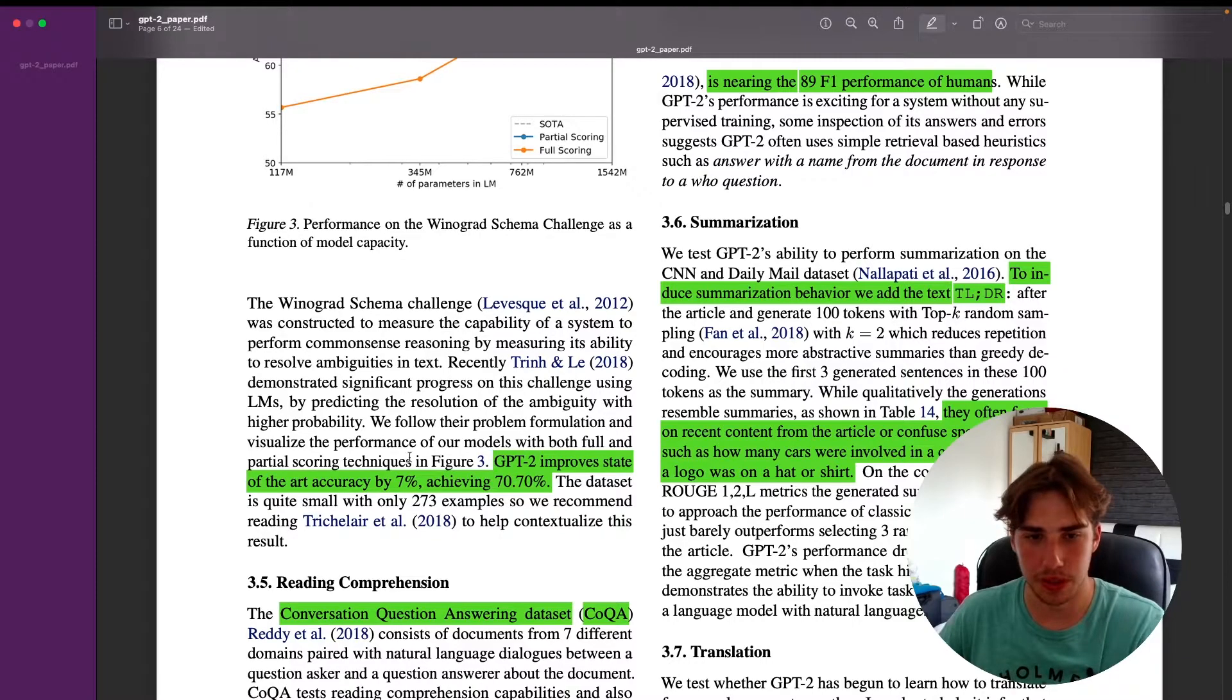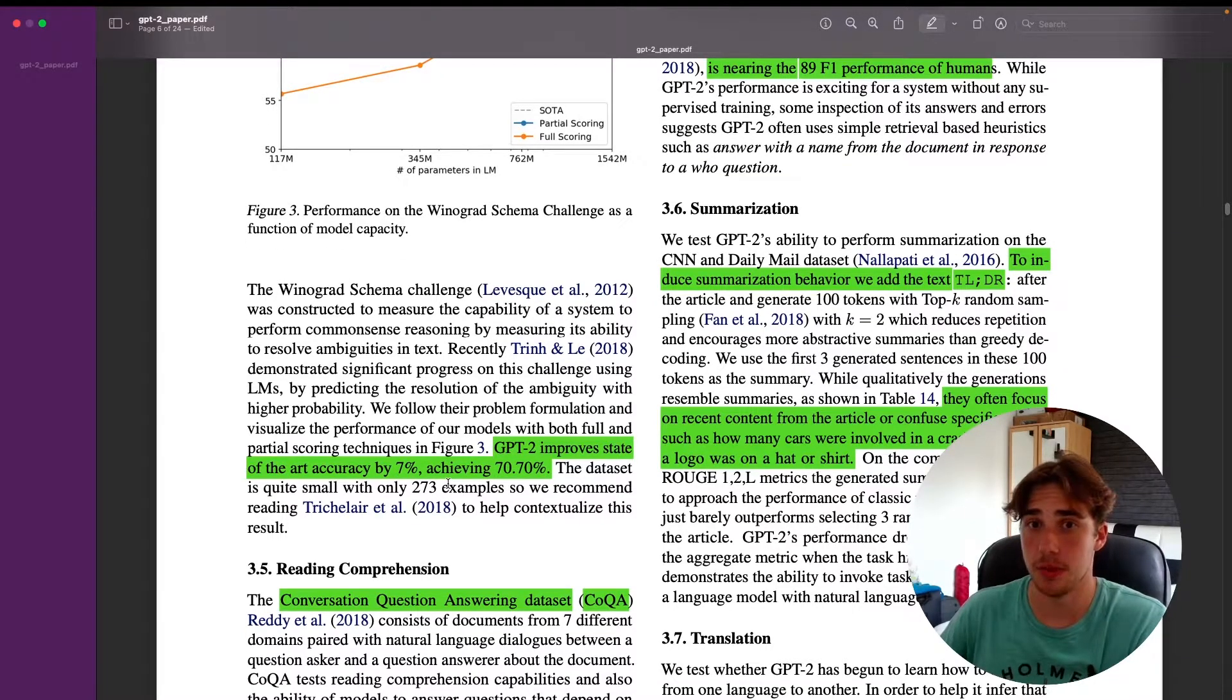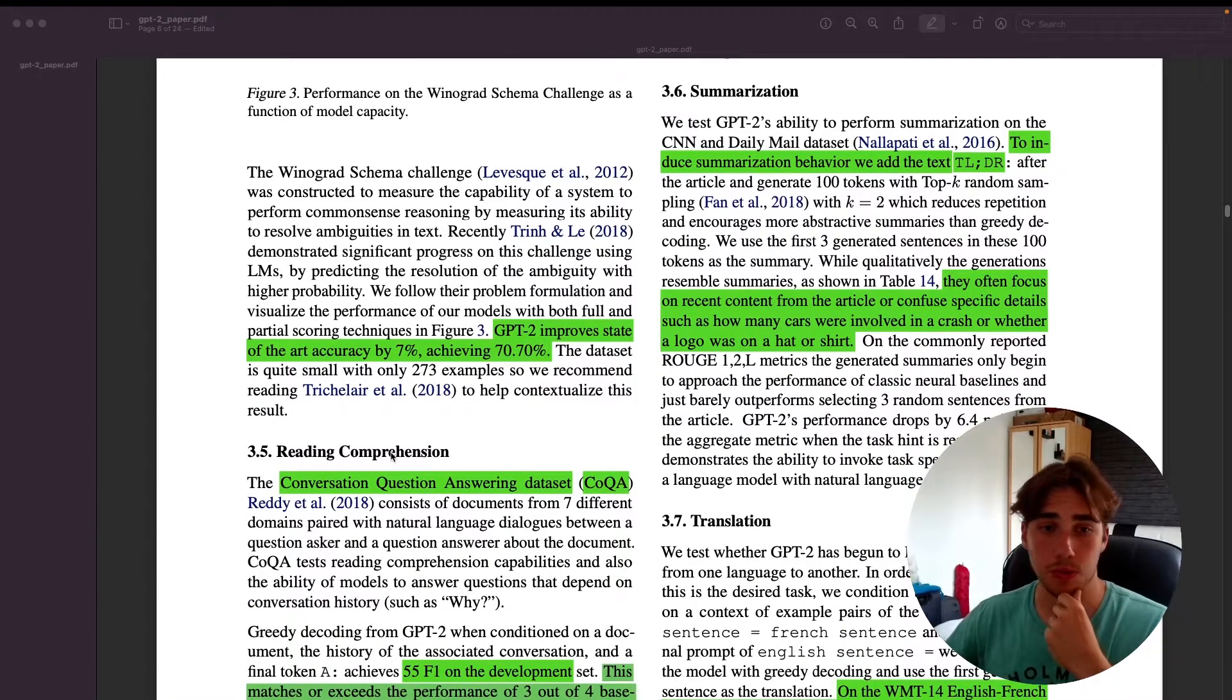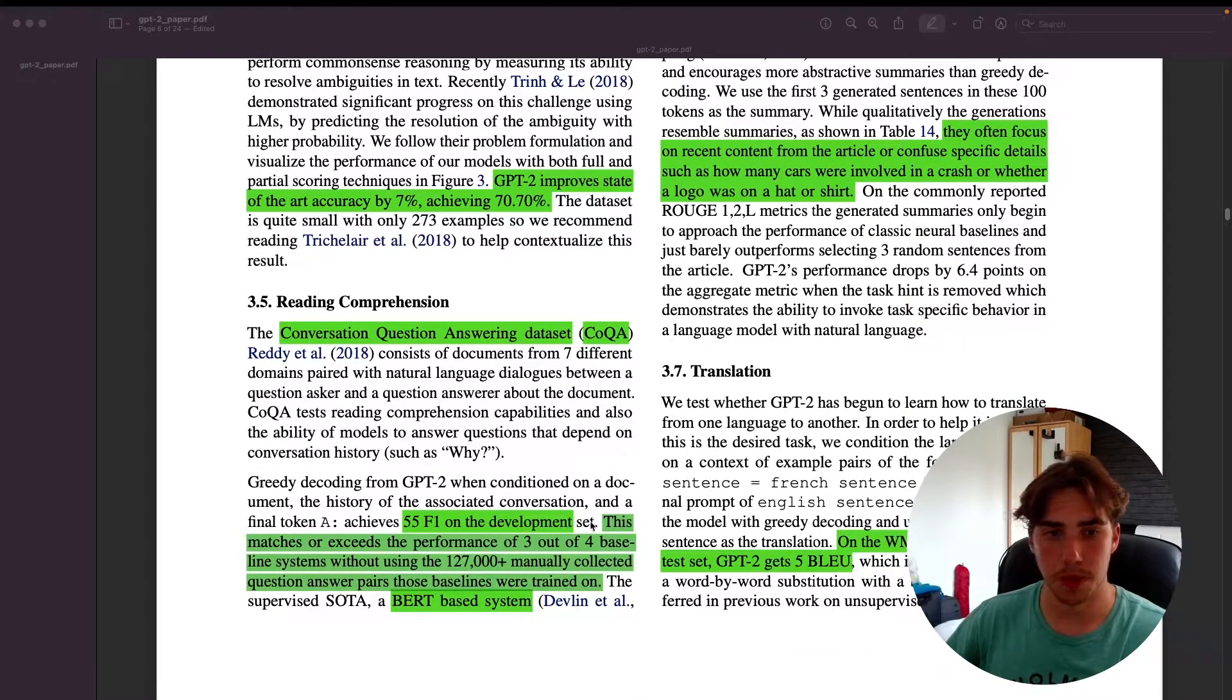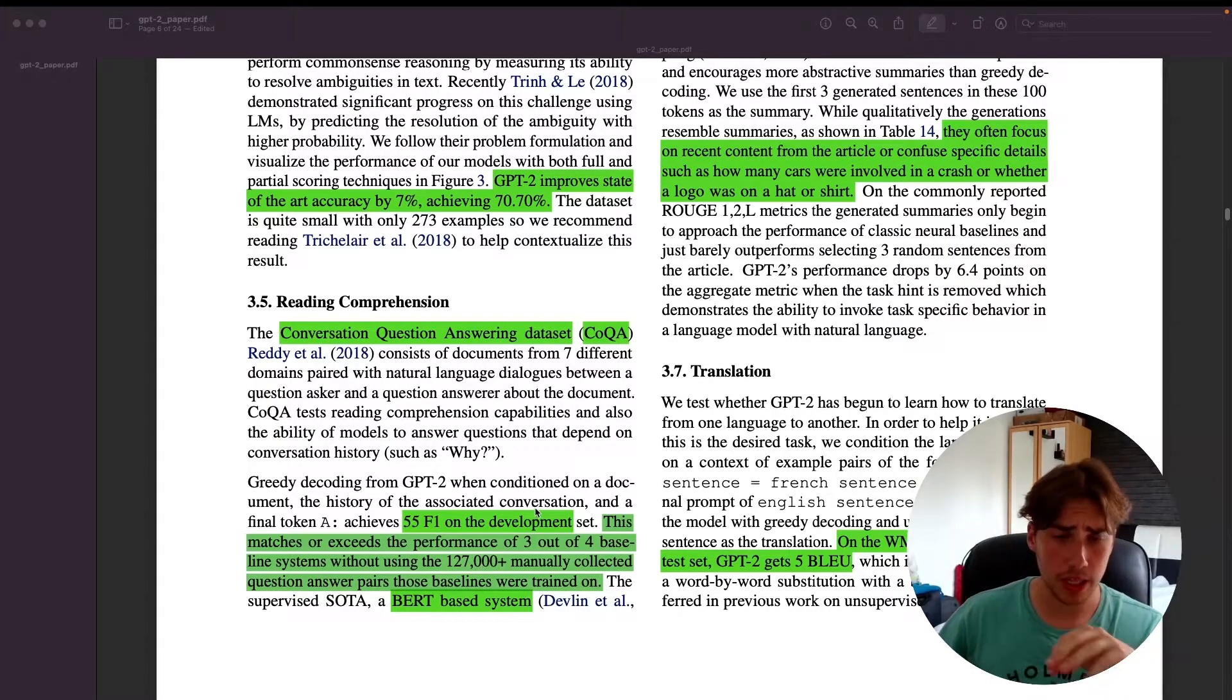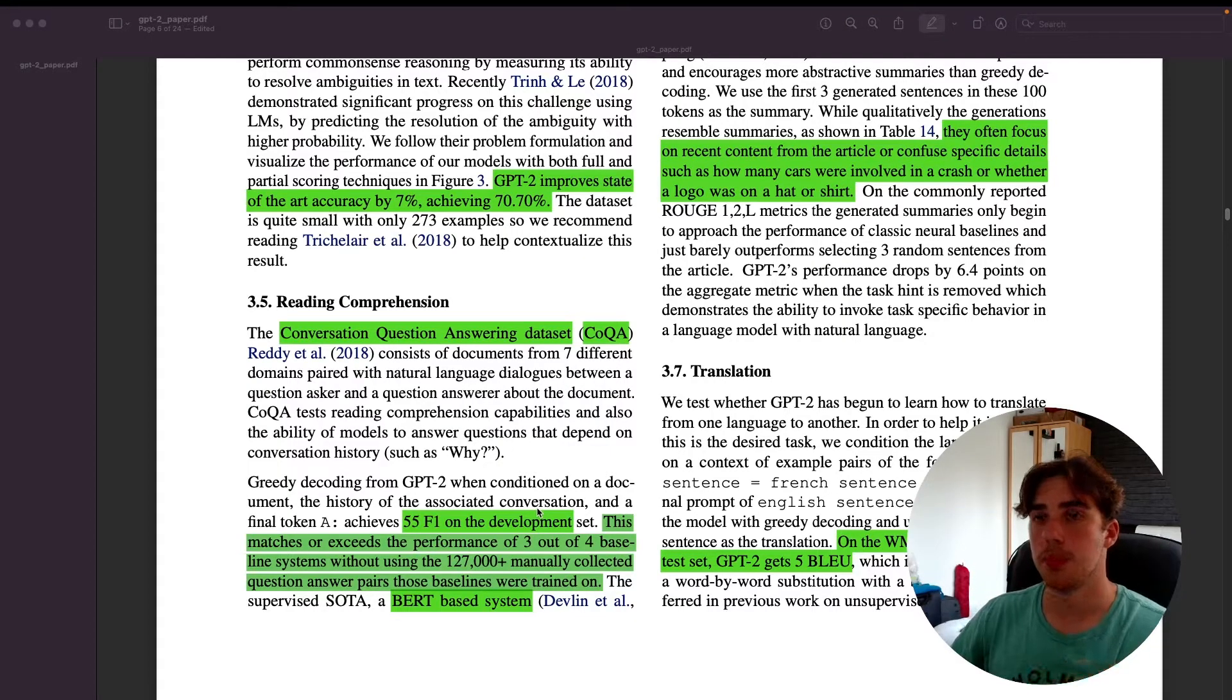The next was reading comprehension on the CoQA dataset. The most important is that it matches or exceeds the performance of three out of four baseline systems without using fine-tuning on manually collected examples. That really shows the potential of zero-shot.